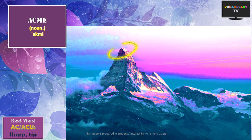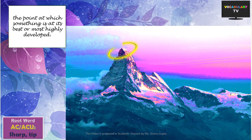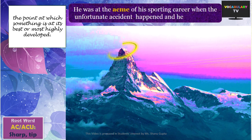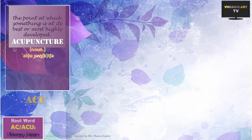With a slight variation of the root, any word that starts with AC or ACU will carry the meaning of sharp, like the tip of something. For instance, we have the word ACME, which means the tip or peak of a mountain, and figuratively stands for the highest level of something — the point at which something is at its best or most highly developed. An example: He was at the acme of his sporting career when the unfortunate accident happened and he lost his leg.